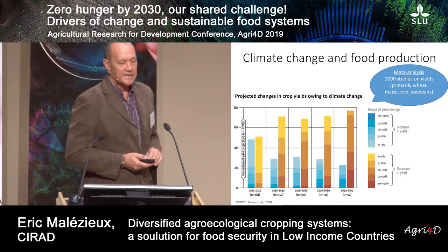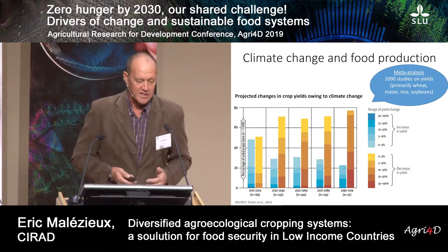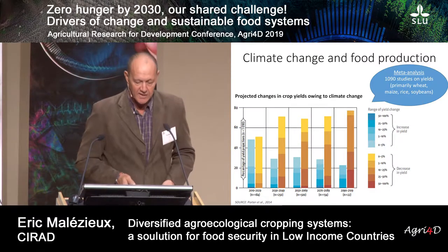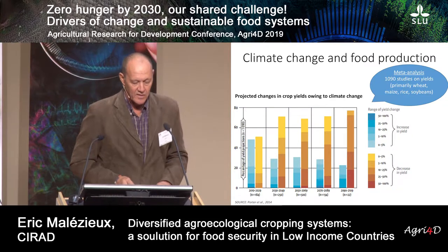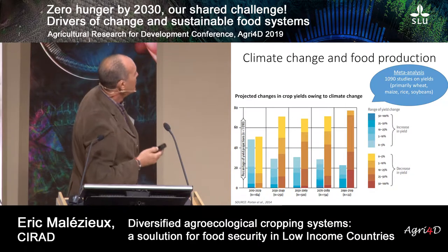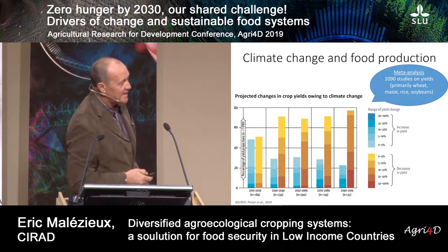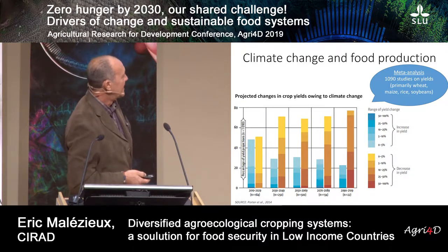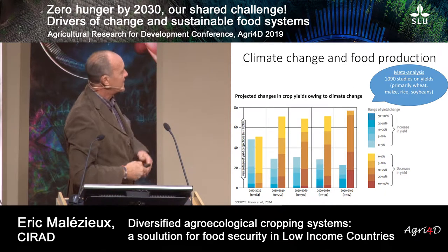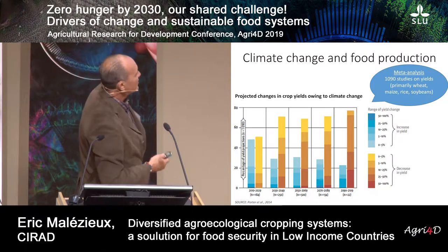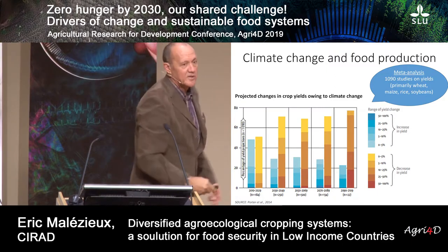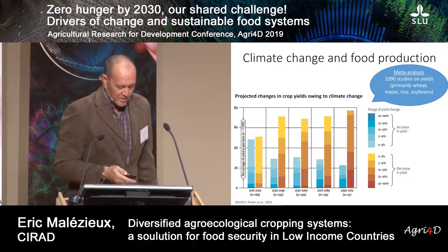The second challenge for food availability is climate change and its relationship with food production. I show here the results of a meta-analysis on more than 1,000 studies on yields, mainly cereals. The blue boxes show increases in yields with climate change and the yellow ones show decreases. As you go to the right — further into the future — the proportion of studies showing yield increases is decreasing, and the proportion showing yield decreases is increasing. The more we go into the future, the more dramatic the situation will be.